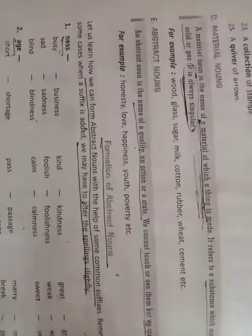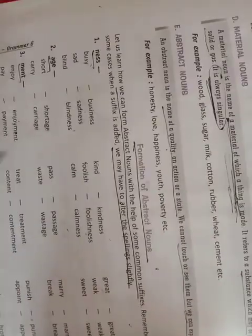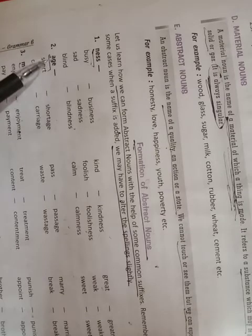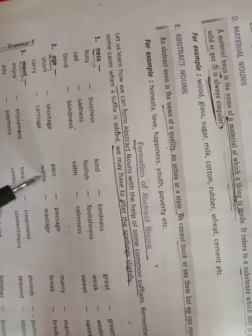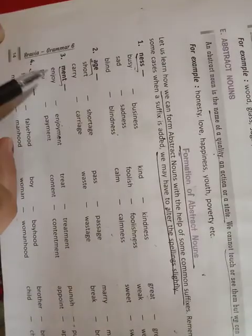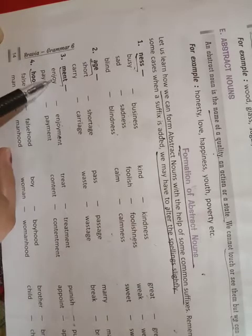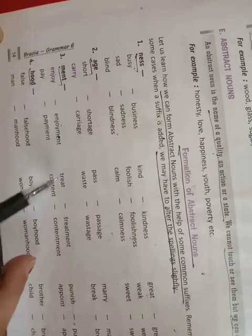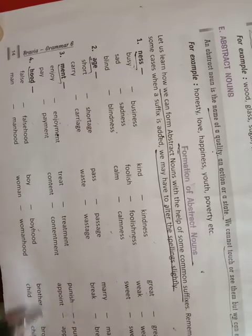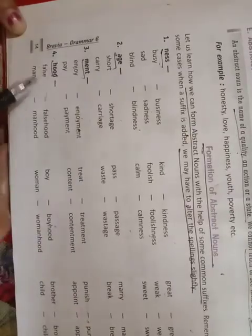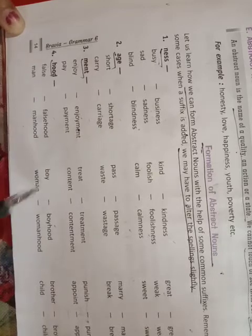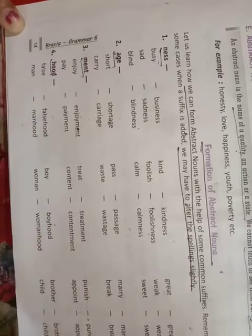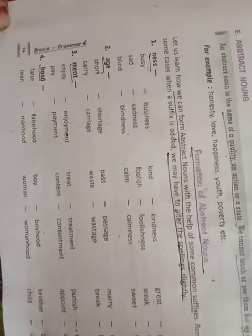By adding the suffix '-age': short becomes 'shortage', carry becomes 'carriage', pass becomes 'passage', waste becomes 'wastage', marry becomes 'marriage', break becomes 'breakage'. By adding the suffix '-ment': enjoy becomes 'enjoyment', pay becomes 'payment', treat becomes 'treatment', content becomes 'contentment', punish becomes 'punishment'. By adding the suffix '-hood': false becomes 'falsehood', man becomes 'manhood', boy becomes 'boyhood', woman becomes 'womanhood', brother becomes 'brotherhood', child becomes 'childhood'.